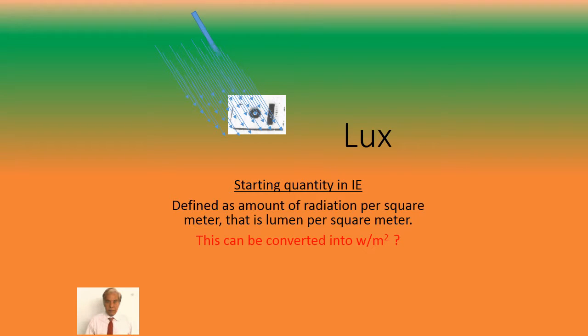The basic quantity which starts the measurement is lux, because the sensor available today is sensitive to the amount of light falling on the sensor. This is defined as the amount of radiation per square meter, that is lumen per square meter.